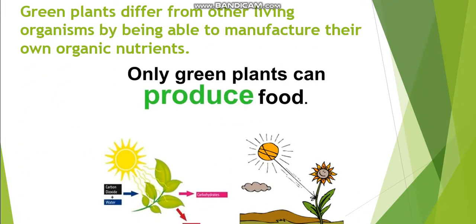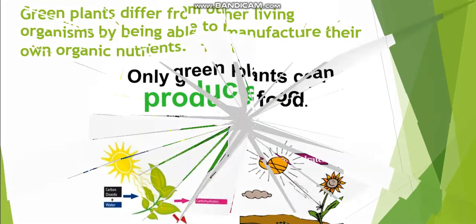Green plants differ from other living organisms by being able to manufacture their own organic nutrients. Only green plants can produce food.